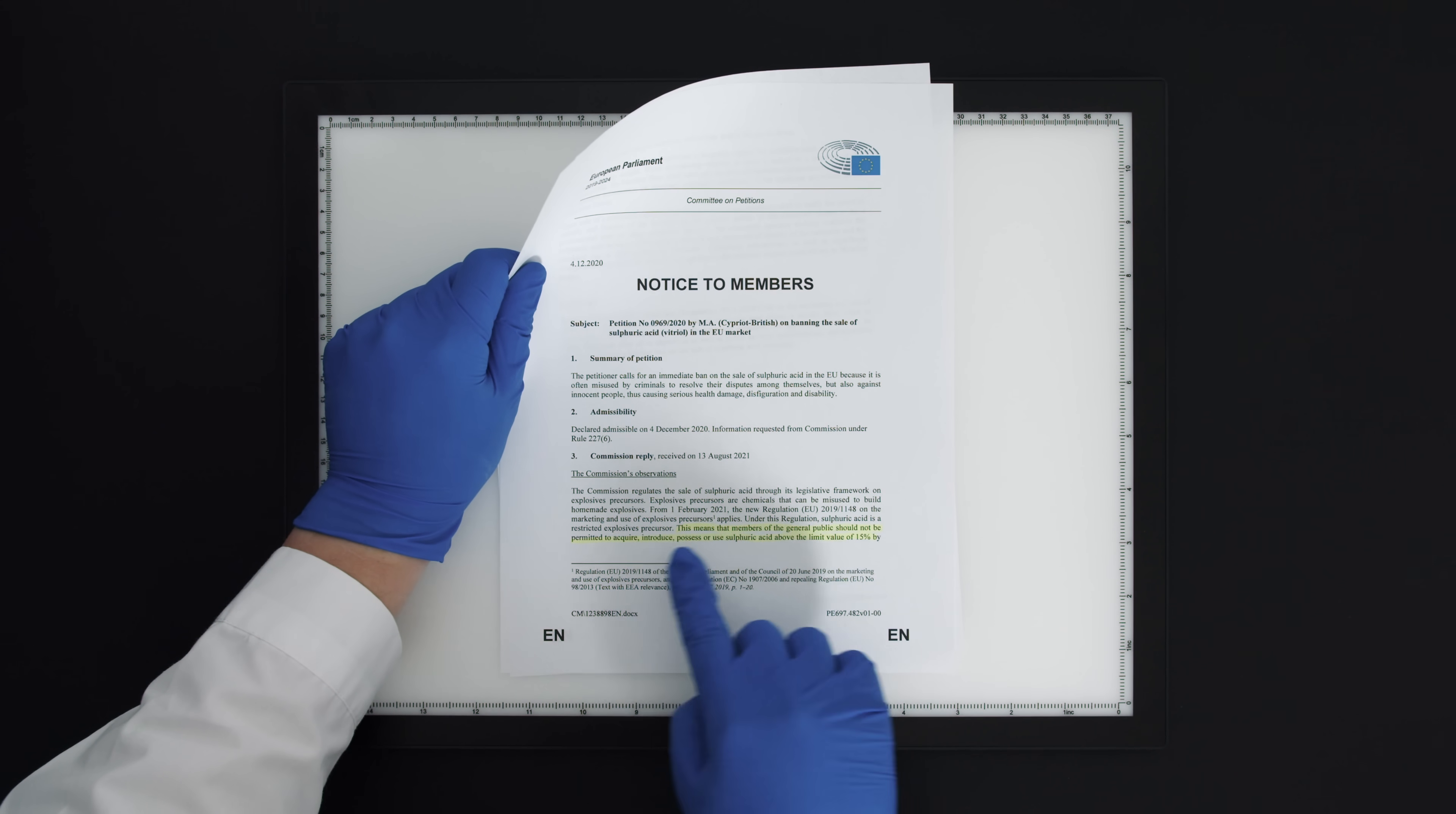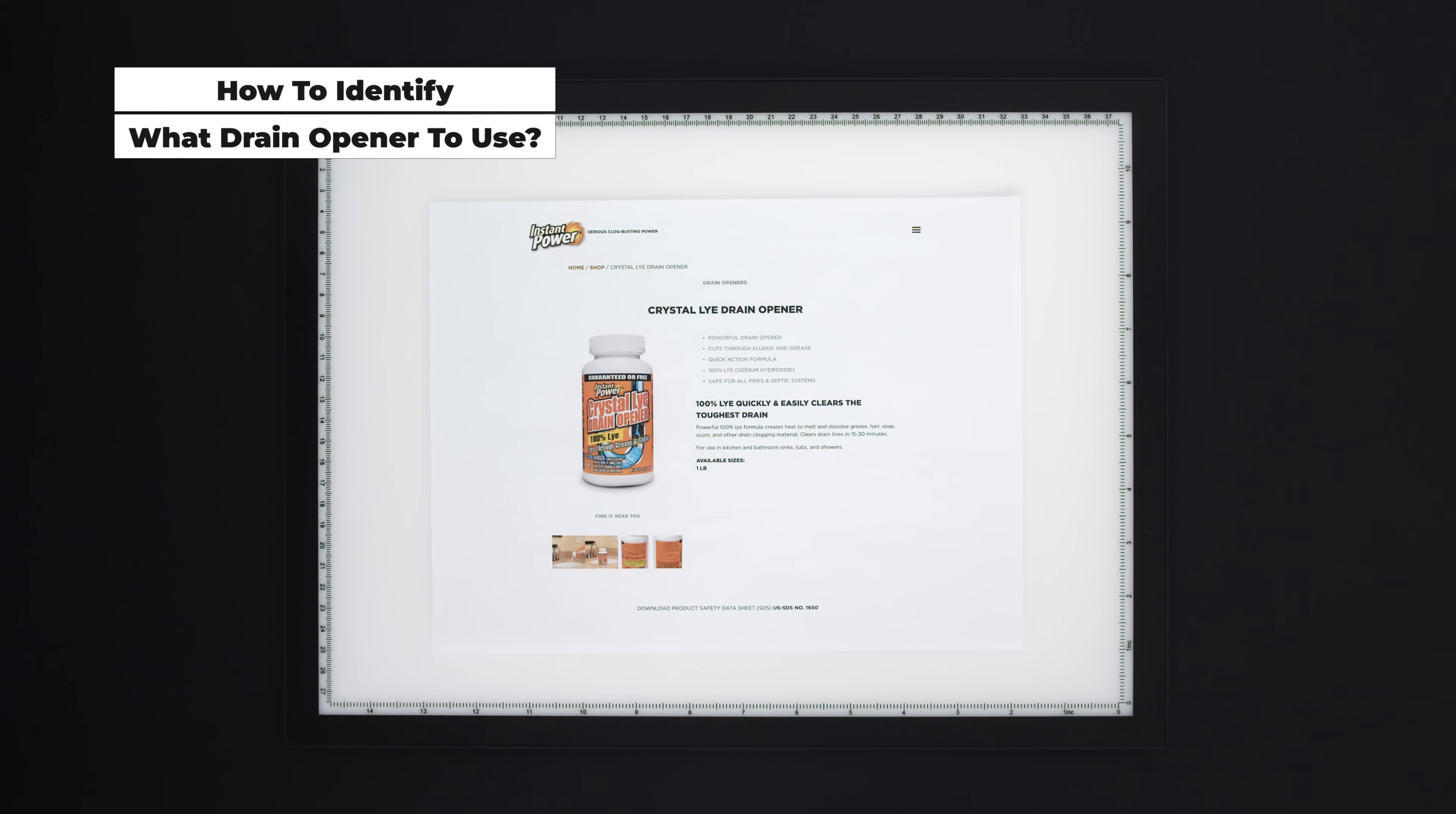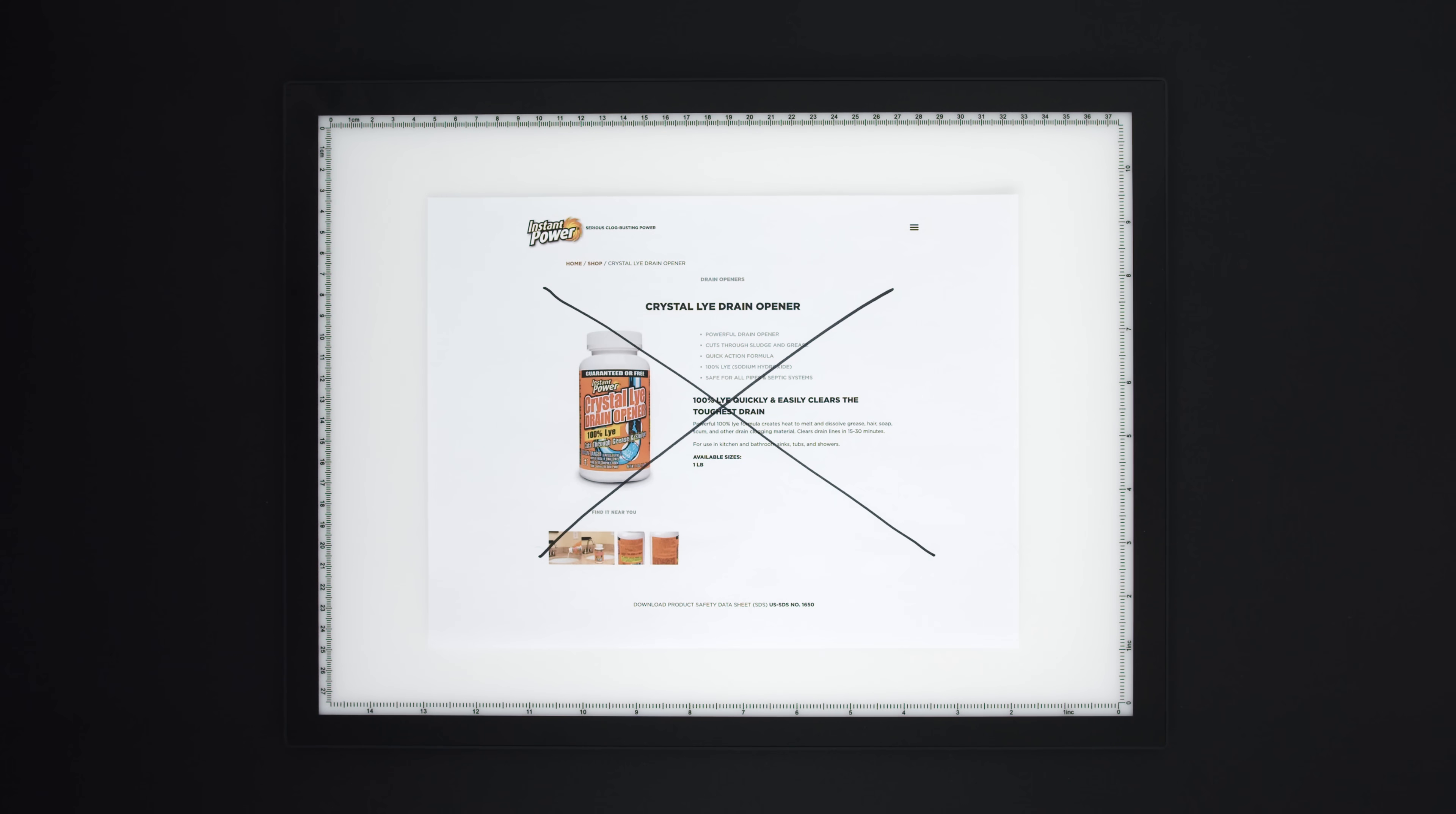Sulfuric acid is unfortunately available only in some countries as drain opener. Some people, especially guys in Europe, might find it rather difficult to obtain it. Not all drain cleaner or opener contains sulfuric acid. Some contain bases like sodium hydroxide. So it is very important to identify the right one before we start distilling it.